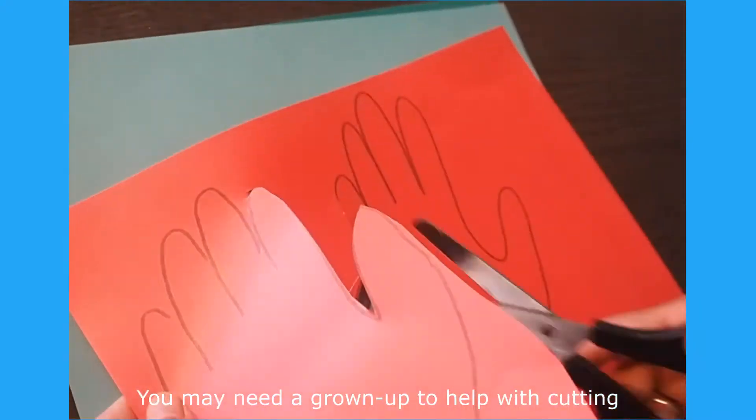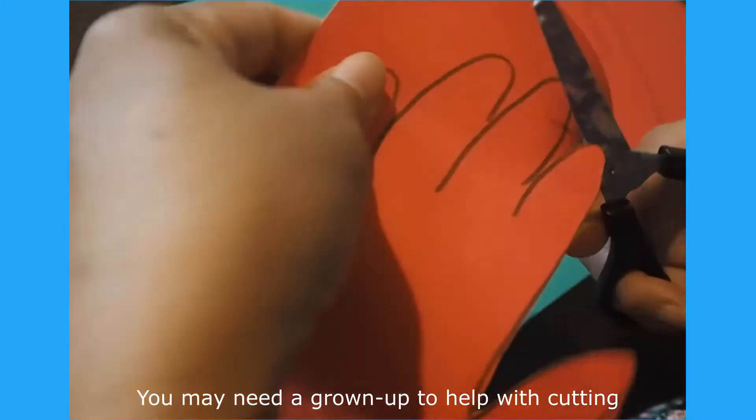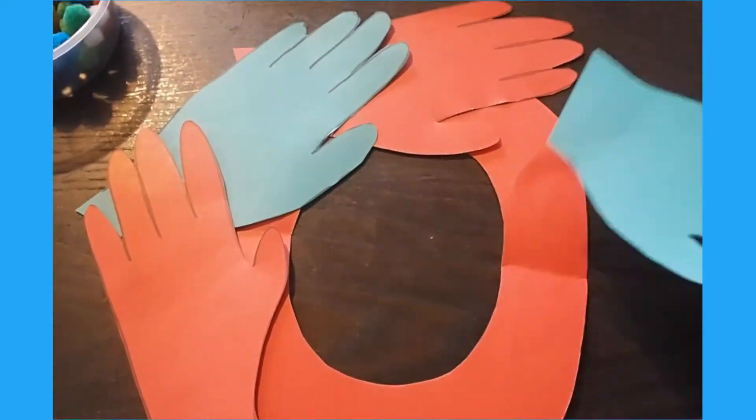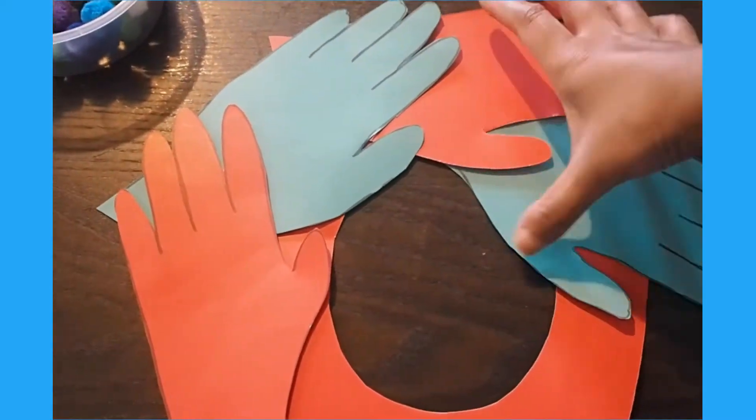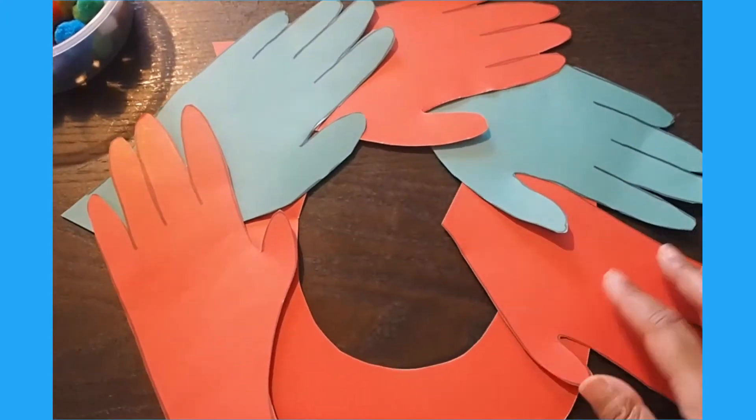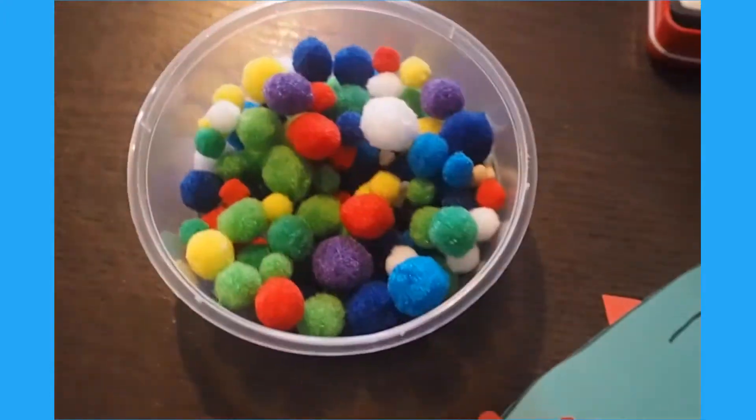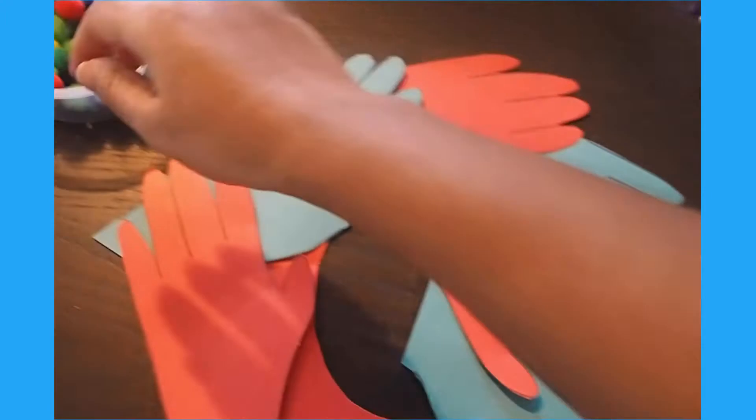Cut out all of the handprints until you have enough to go around your ring. Now assemble all of the handprints onto the ring and stick them down with glue. You can add on berries and decorate your wreath with different materials.